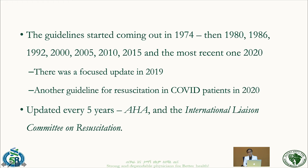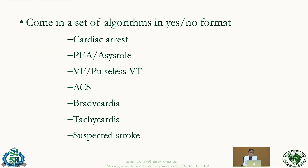The guidelines involve institutions such as the American Heart Association and the International Liaison Committee on Resuscitation, which includes the European Cardiac Association. The guidelines come in the form of algorithms set in a yes-or-no format. There are seven guidelines total; we'll focus on the cardiac arrest algorithm including PEA/asystole and VFib/pulseless VT algorithms.